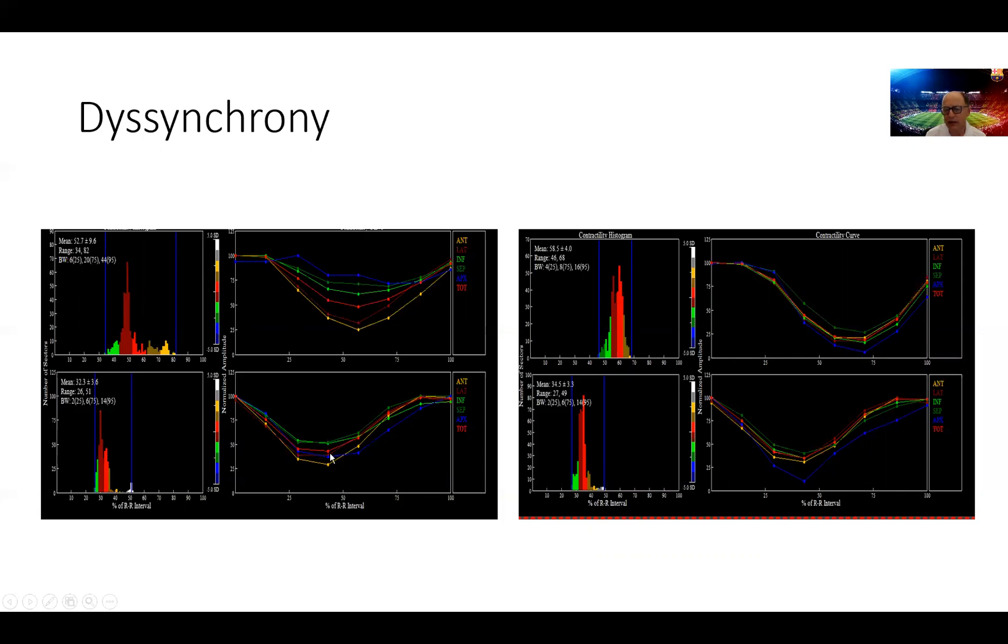This ventricle not only has ischemia, left ventricular dilatation, drop in ejection fraction, but becomes dyssynchronous in contrast to a study on the right hand side here where we have normal synchrony at rest and post stress. This is a normal observation on a normal patient and this is the patient we're dealing with right now when it becomes dyssynchronous.